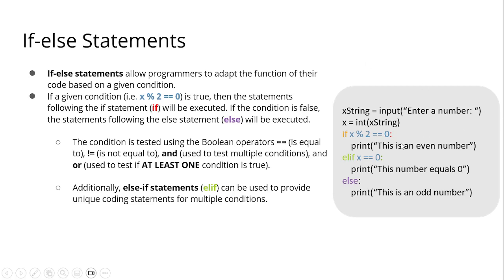If the condition is false, the statements following the else will be executed. For example: if x % 2 == 0, print 'even number'; elif x == 0, print 'this number equals 0'; else print 'odd number'. The condition is tested using boolean operators: == for equal, != for not equal, 'and' to test multiple conditions, and 'or' to test if at least one condition is true. elif in Python can be used to provide unique coding statements for multiple conditions. So if 2 divided by 2 has remainder 0, it is even; if 3 divided by 2 has remainder 1, it is odd.